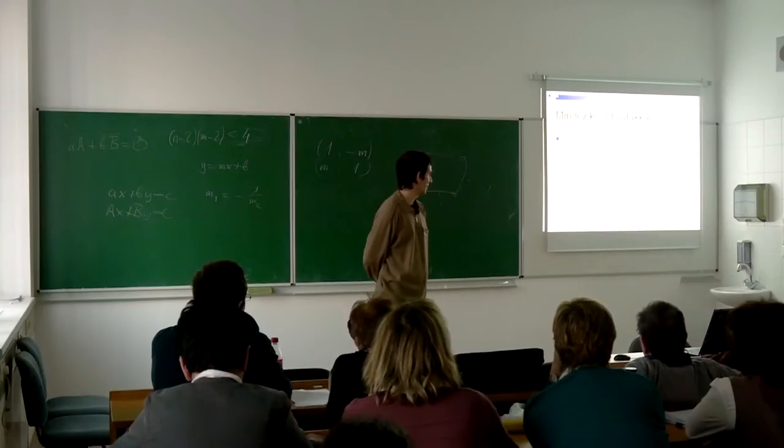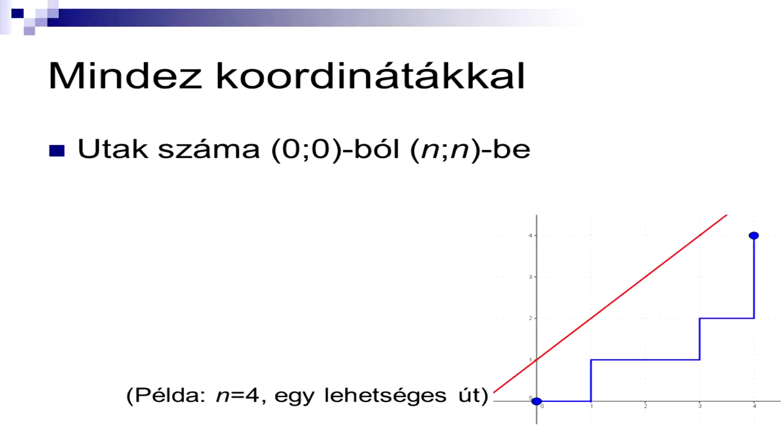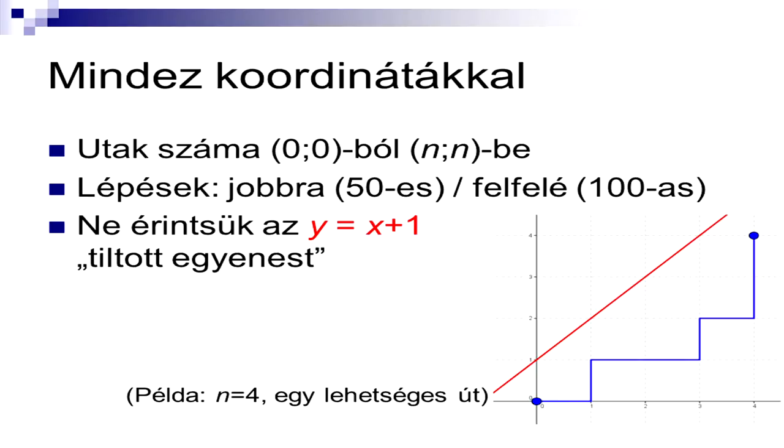Egyfajta más reprezentáció segíthet itt a továbblépésben, hogyha mindezt áttesszük egy koordináta-rendszerbe. Az origóból indulunk, és az (N,N) pontba szeretnénk eljutni úgy, hogy mindig jobbra vagy felfele léphetünk. Egy jobbra lépés feleljen meg annak, hogy most 50-essel fizet valaki, egy felfele lépés pedig annak, hogy most 100-assal fizet, és akkor az lesz a kérdés, hogy hány ilyen utunk van a (0,0)-ból az (N,N)-be. Csak jobbra és felfele lehet lépni úgy, hogy ne érintsük azt a pirossal berajzolt, úgynevezett tiltott egyenest. Itt egy lehetséges út látszik, kékkel berajzolva, N=4 esetére.